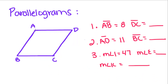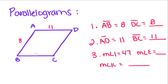So if AB equals 8, then DC equals what? Well, since it's a parallelogram and opposite sides are congruent, DC also has to equal 8. The measure of AD is 11, so the measure of BC, which is opposite, has to be 11 as well.